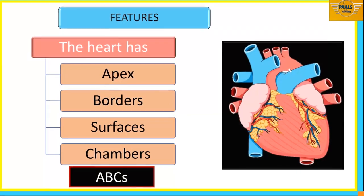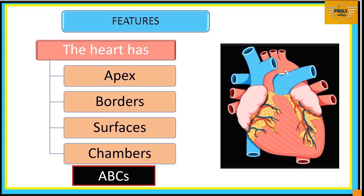We have the ABCs of the heart — these are the areas we'll consider when discussing the external features. The first is the Apex of the heart. We also have the Borders, and then the Surfaces, and finally we'll do a lot of work in the Chambers. These are the major areas we'll consider when discussing the features of the heart — that's why we call them the ABCs of the heart.